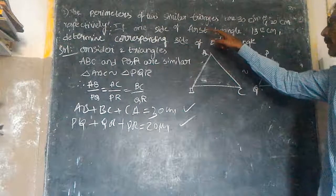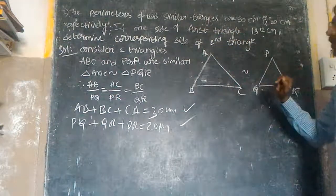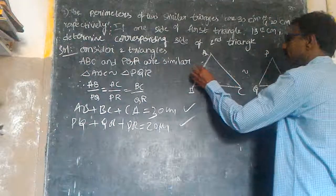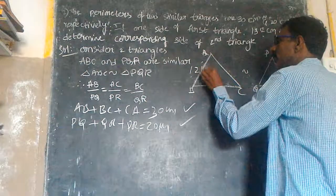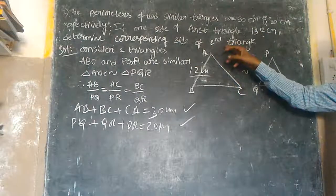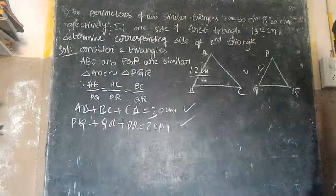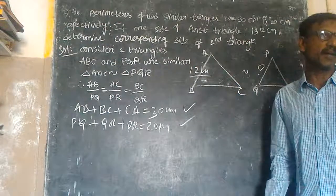The next triangle here, this is 12 cm. Then corresponding side of the second triangle.